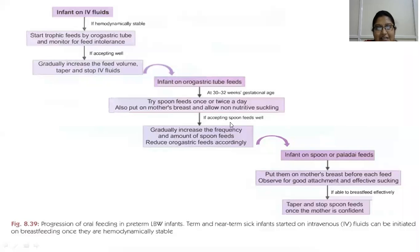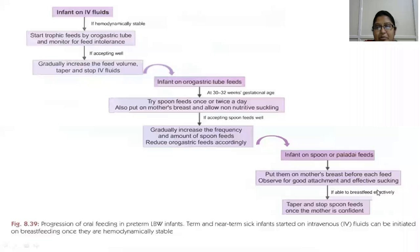If accepting spoon feeds well, increase the frequency and amount of spoon feeds and reduce orogastric feeds accordingly. Then plan to put them on the mother's breast before each feed, observe for good attachment and effective suckling. If able to breastfeed effectively, taper and stop spoon feeds once the mother is confident.